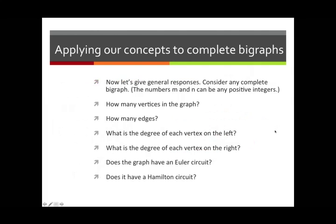Let's give the general responses for any complete bi-graph with positive integers m and n. How many vertices? There are m vertices on the left and n vertices on the right, so the total number of vertices is m plus n. For edges, each of the m vertices on the left must connect to n vertices on the right, so the correct operation is multiplication: the number of edges is m times n, written simply as mn.